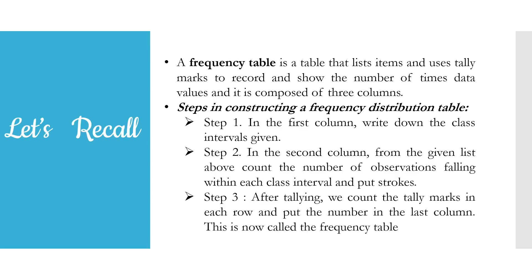I hope you were able to follow our examples. Let us have a quick recall of what we have learned. A frequency table is a table that lists items and uses tally marks to record and show the number of times data values appear, and it is composed of three columns. Step one: in the first column, write down the class intervals given. Step two: in the second column, count the number of observations falling within each class interval and put strokes. Step three: after tallying, count the tally marks in each row and put the number in the last column. We are now done with our frequency table.